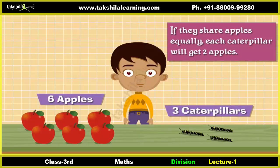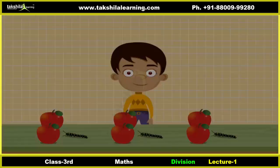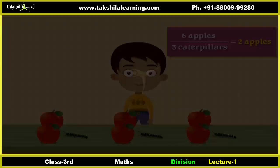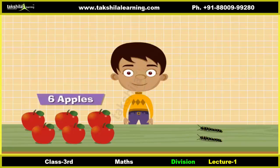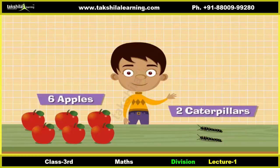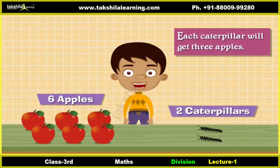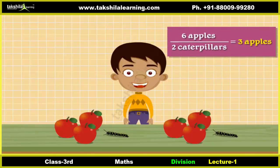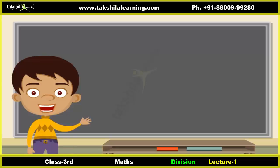Relate division with multiplication. Equal sharing: here are six apples and three caterpillars. If they share apples equally, each caterpillar will get two apples. Six apples divided into three caterpillars equals two apples each. If there are six apples and two caterpillars, each caterpillar will get three apples. Six apples divided by two is equal to three apples each.